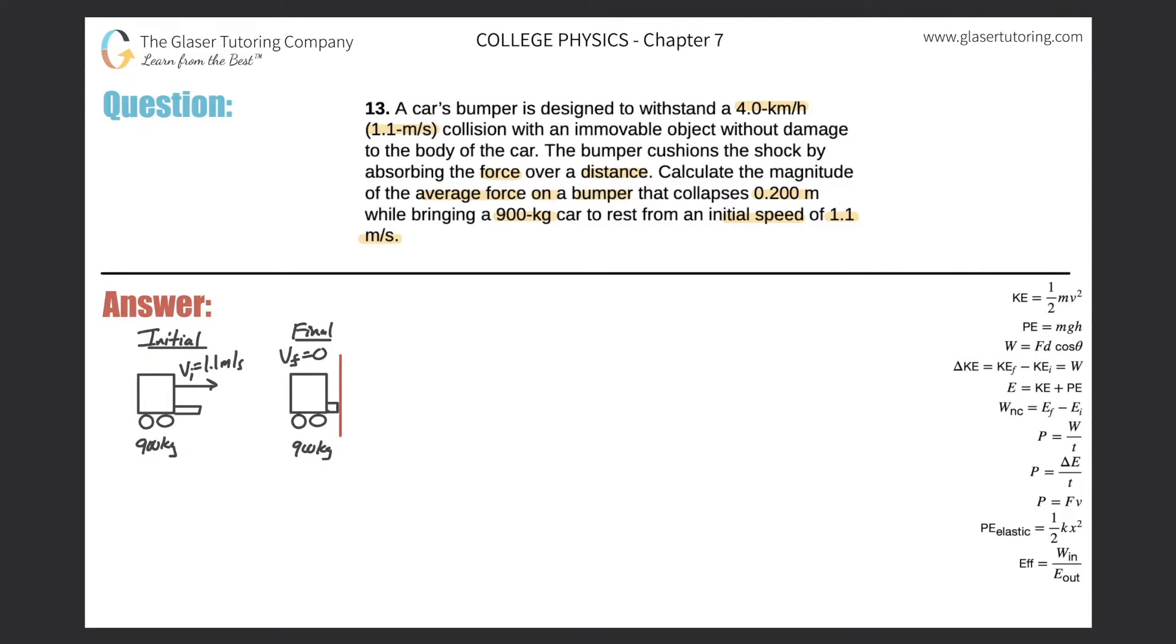Alright, so here's our two scenarios. Here's the initial scenario. Mass of the car is 900. Initial velocity of the car is 1.1 meters per second, and it's moving, I'm assuming, to the right. Here's the final state. It hits the immovable object. The final velocity then of the car is 0. Still the same mass, but if you notice here, the bumper has changed in size. And how much has it changed? Well, it told us. It changed in size by 0.2 meters. Alright, so our job is to calculate the average force on the bumper.